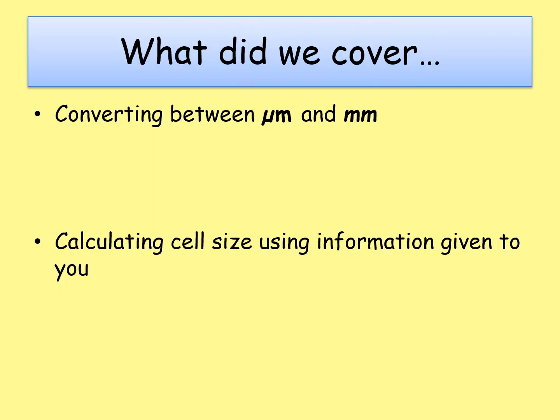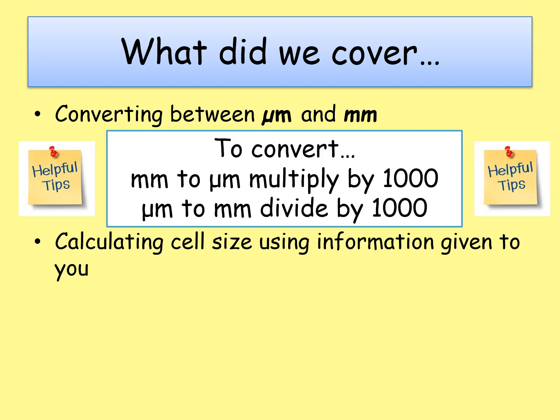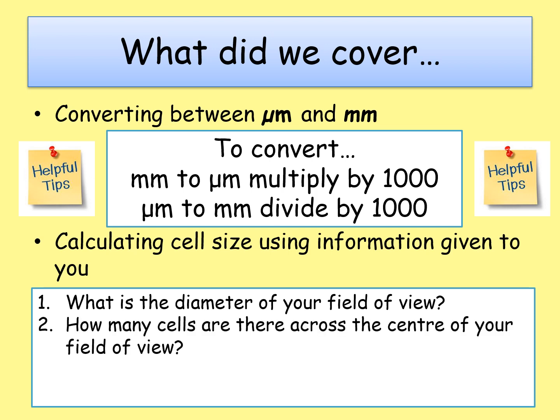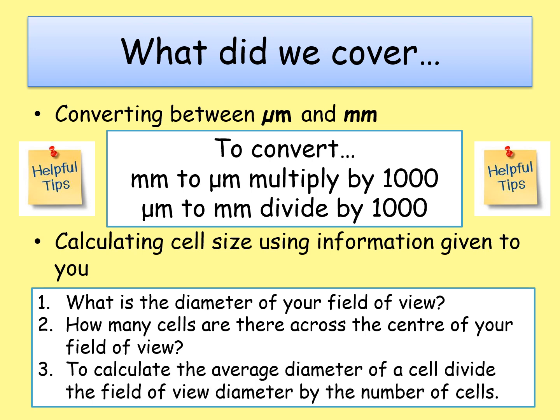Let's recap what we covered. Skill one: converting between micrometres and millimetres. To convert millimetres to micrometres, multiply by 1000. To convert micrometres to millimetres, divide by 1000. Skill two: calculating cell size from given information — whether in a diagram or a written question. Steps: identify the diameter of your field of view, identify the number of cells across the centre, then divide the field of view diameter by the number of cells, making sure you use the correct unit.